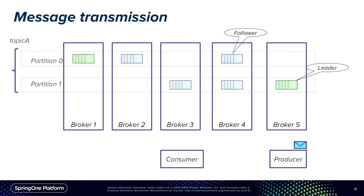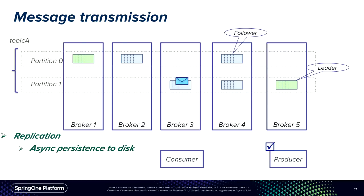When you transmit a message, you have a topic with partitions hosted on a set of brokers. The producer sends the message to the leader, and followers constantly pull messages from the leader to keep up. Once the message has been replicated to all replicas, it is considered committed. At that point, the producer receives its acknowledgement. The difference from traditional messaging is that at commit time, the message may not yet have been flushed to disk — it may still be in disk buffers — which contributes to Kafka's low latencies.